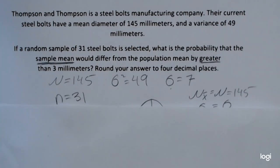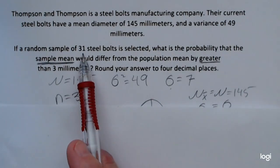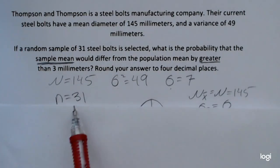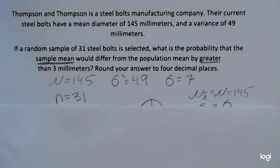We're also given that a random sample of 31 steel bolts was selected, so our sample size is 31. That's important. Since we're using the Central Limit Theorem, we want to use that standard error of the mean or the standard deviation that's associated with the distribution of X bar.